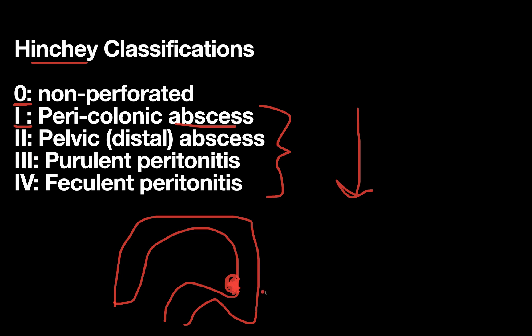And then you can imagine that if, let's say my diverticulitis outpouching was right here, it perforated, but it perforated so much that it was able to move to a different part of the abdomen, and then we had an abscess over here, that would be a distal abscess, and that would be Hinchey class two.